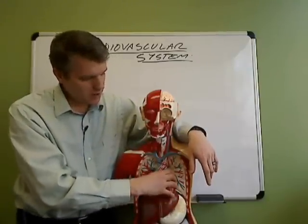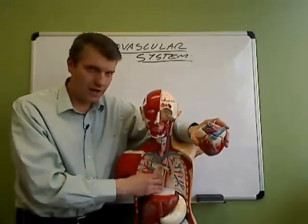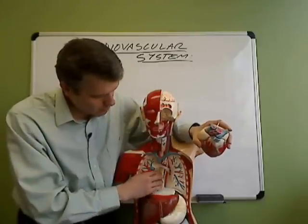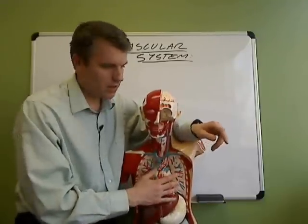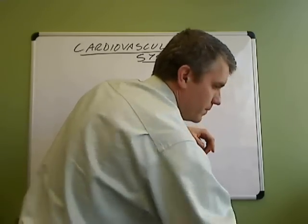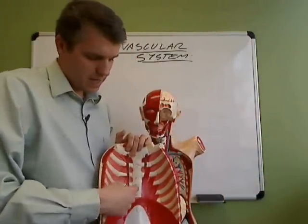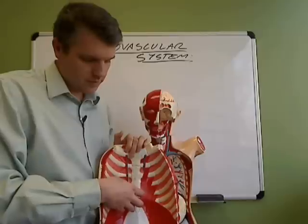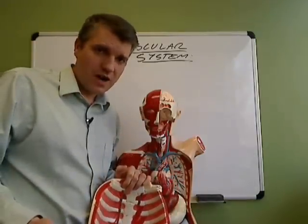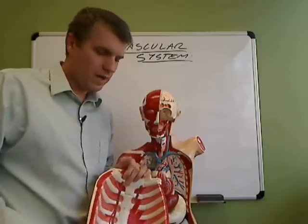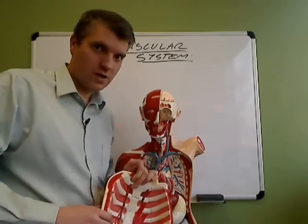Another thing about the location of the heart — if I take this heart out, the spinal column is back here just behind the heart. And just in front of the heart is the sternum. The heart would lie just a little bit to the left of the sternum. The reason I mention all this: when you're doing CPR and doing compressions on the sternum, you're actually squeezing the heart between the sternum and the spine, and that's what's helping to squish the heart and push the blood.